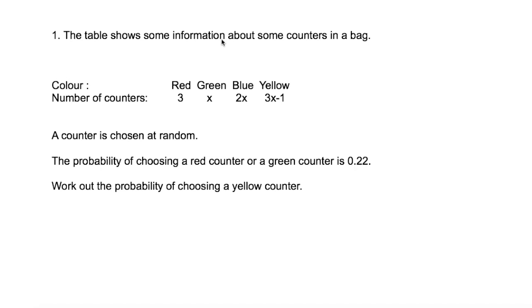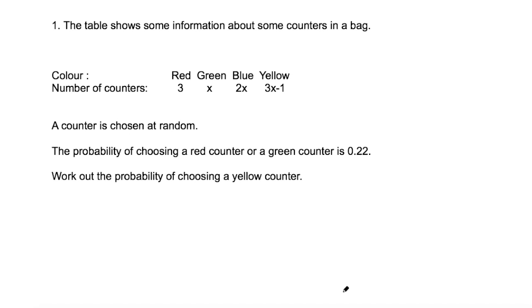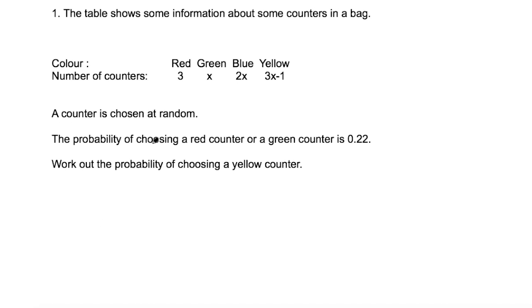The first question says the table shows some information about some counters in a bag. It's a table where the colour is red, green, blue, or yellow, and the number of counters is 3, x, 2x, or 3x minus 1. A counter is chosen at random, the probability of choosing a red counter or a green counter is 0.22. Work out the probability of choosing a yellow counter. They don't tell you how many counters there are in total, but we can work it out using this probability and by finding an expression for the total number of counters.